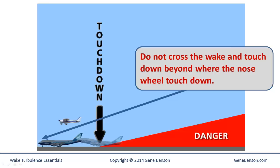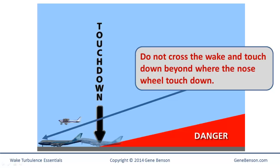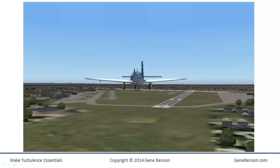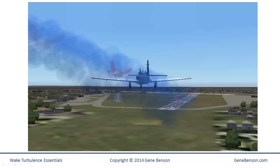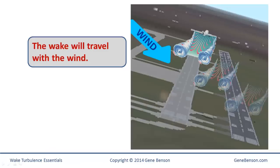When landing behind a large airplane, we must fly our approach above that of the large airplane and touch down beyond where the large airplane's nose wheel touched down. Caution is required when landing behind a large airplane, even if the large airplane used a different runway. In this case, the large airplane landed on the runway shown on the right, but its wake must be crossed to land straight in on the runway to the left. The wake will travel with the wind. In the absence of wind, the wake will move laterally over the ground at a speed of two or three knots.